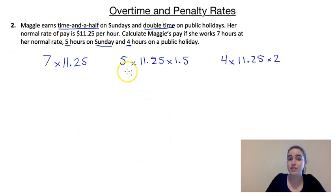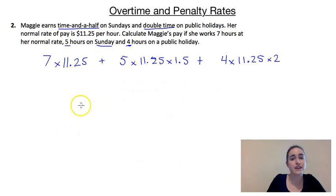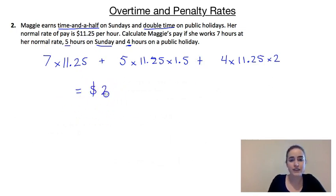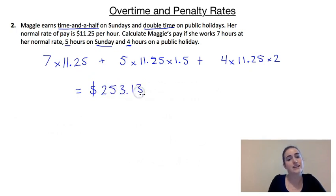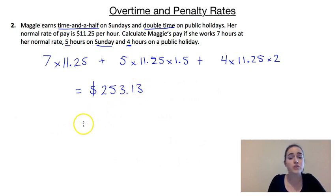To figure out how much she gets paid all up, we add all of those together. When we calculate that, she's going to end up getting $253.13. Just a reminder that we always round to two decimal places when we're talking about money.